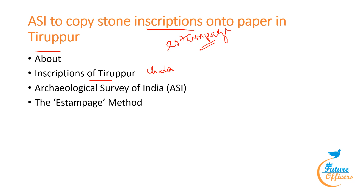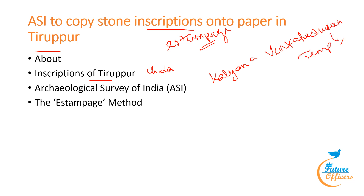Notable sites with inscriptions include Kalyana Venkateshwara Temple and Thalishwara Temple, along with various ancient Shiva temples. Cultural insights from these inscriptions reveal details about trade, social structure, and religious practices prevalent in the region.